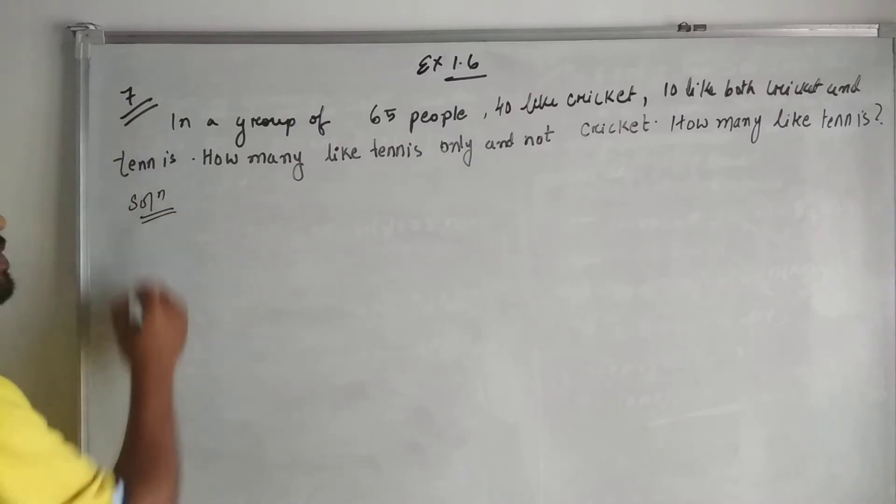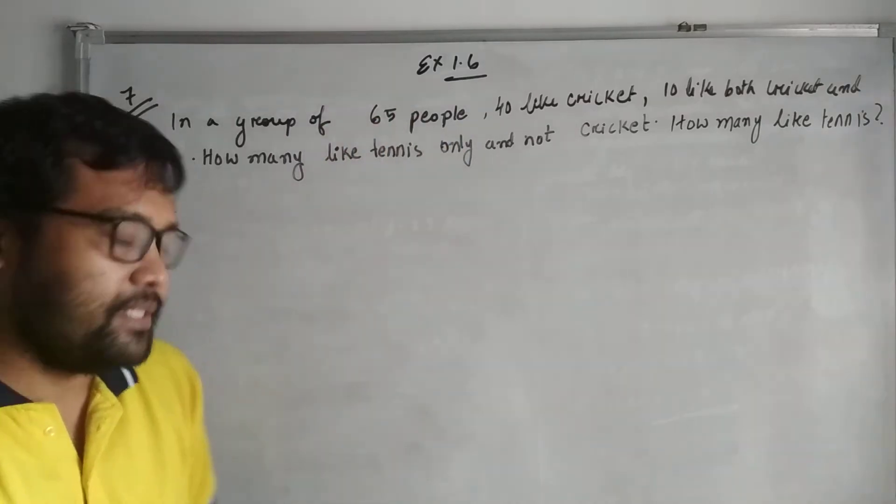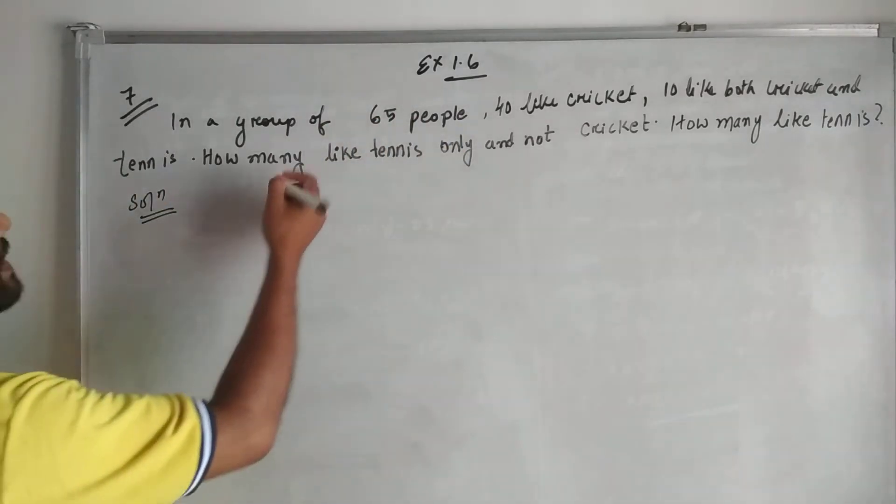Solution. I am considering the set to be C for cricket and T for tennis. Now, what all things are given? In a group of 65 people.